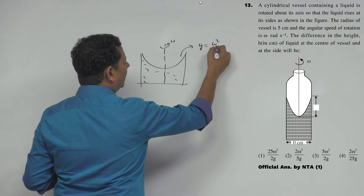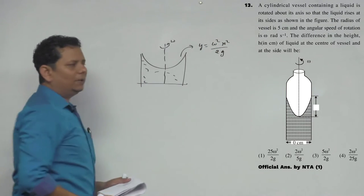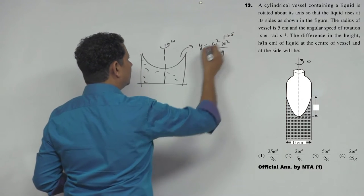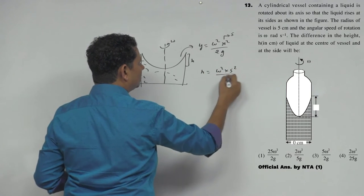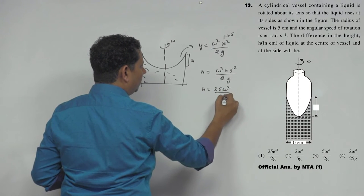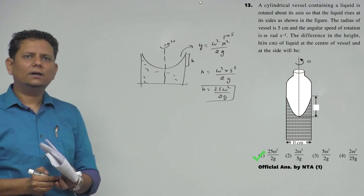We have the equation h = ω²r²/2g, a direct formula. Here x value is 5, so the height h will be equal to ω² multiplied by 5² divided by 2g. So h equals 25ω²/2g. Based on this, we can say that option number A would be the right answer.